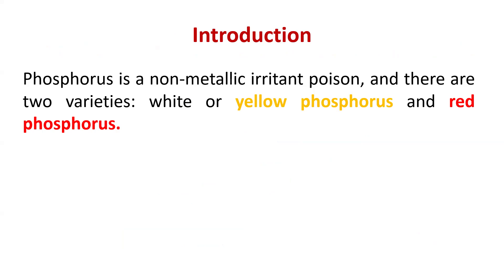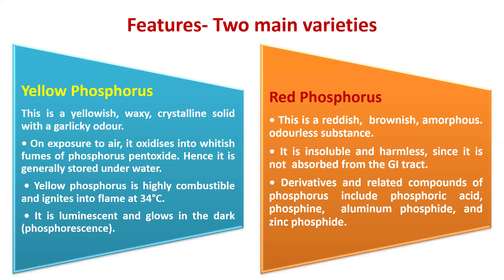Phosphorus is a non-metallic irritant poison and there are two varieties: white or yellow phosphorus and red phosphorus. Yellow phosphorus is yellowish, waxy, crystalline solid with a garlicky odor. On exposure to air, it oxidizes into whitish fumes of phosphorus pentoxide. Hence it is generally stored under water. Yellow phosphorus is highly combustible and ignites into flame at 34 degrees centigrade.